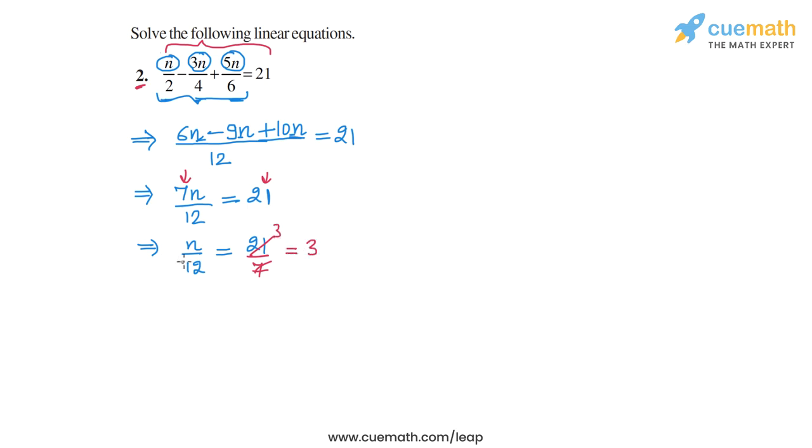And in the final step, we can take this 12, we can get rid of this 12 by multiplying both sides of the equation by 12.